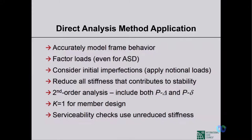Third, consider initial geometric imperfections in two ways: model the frame with initial sway/drift at each level, or apply notional loads (0.002 × Yi at each level). Fourth, reduce all stiffnesses contributing to stability — EA is taken as 80% of nominal; EI reduction depends on the axial force level relative to axial capacity. Then conduct second-order analysis accounting for both P-large delta and P-small delta.